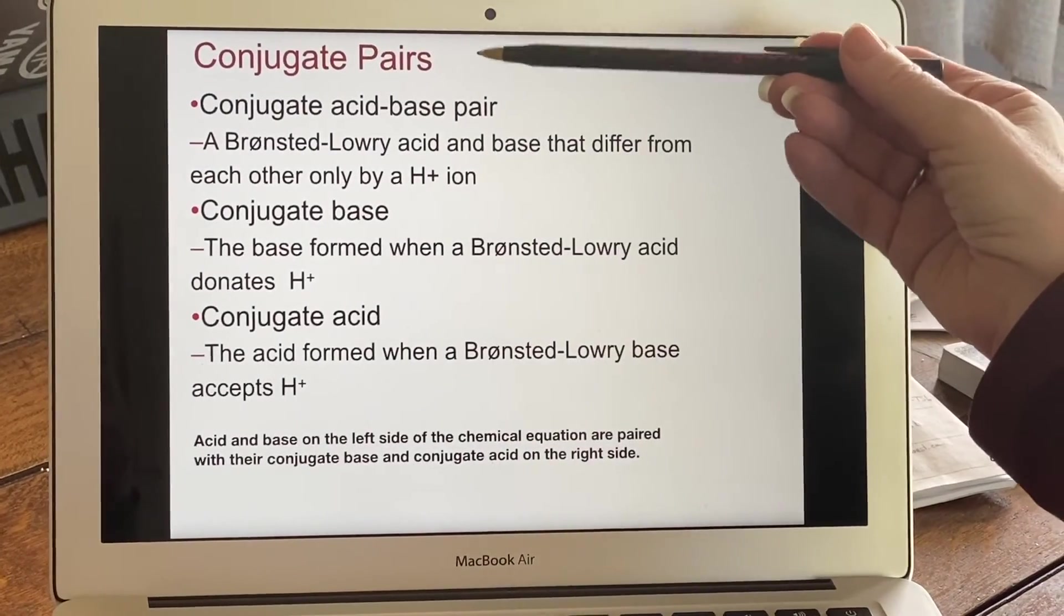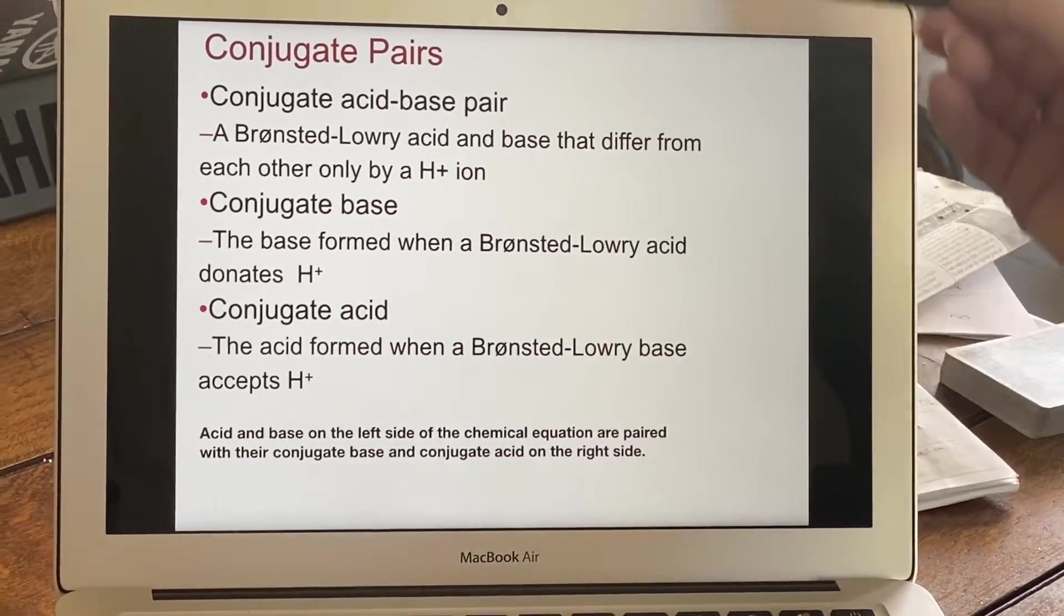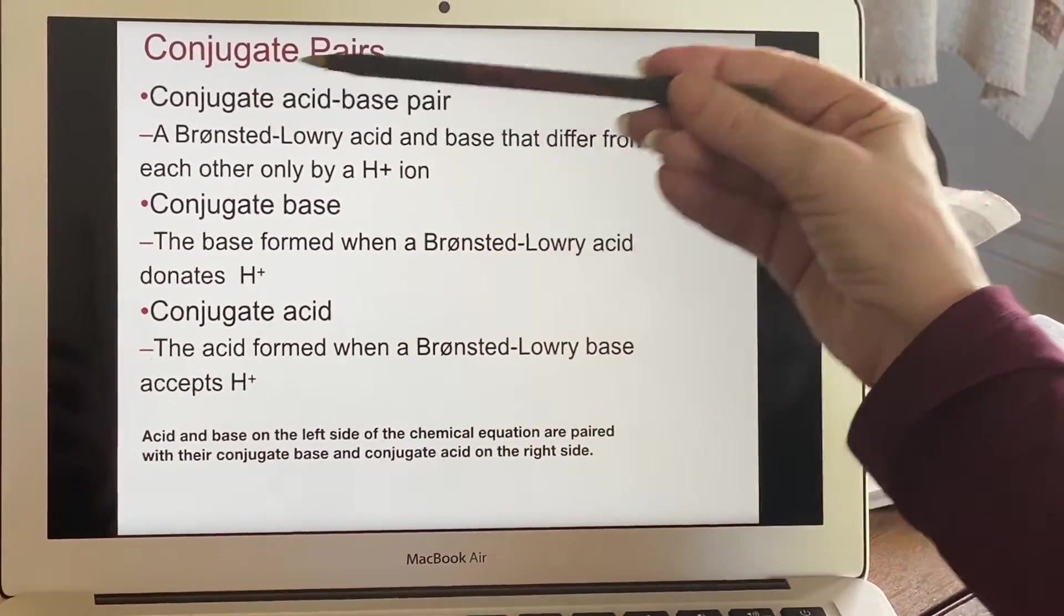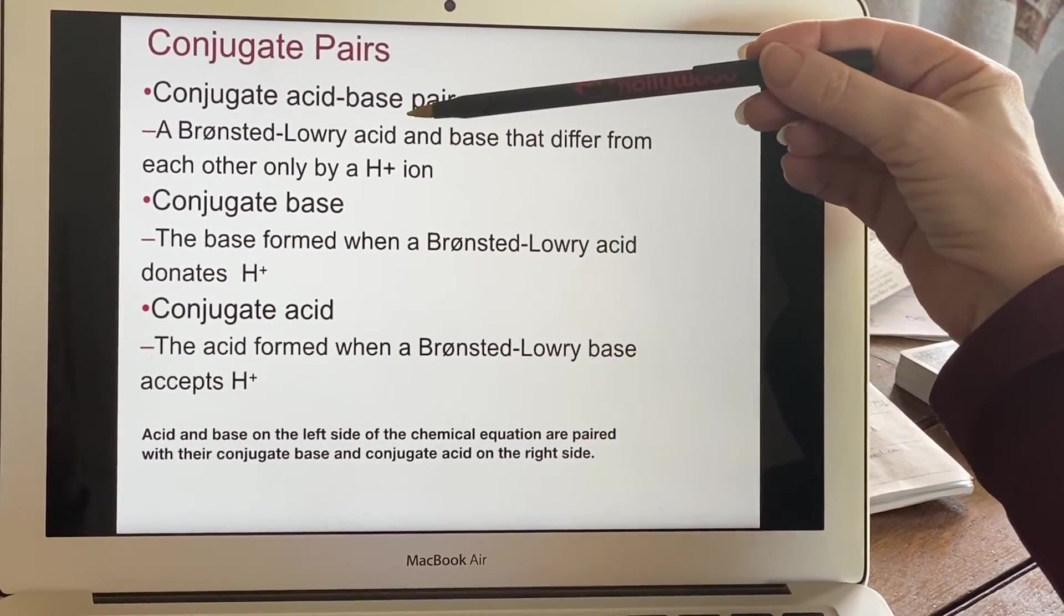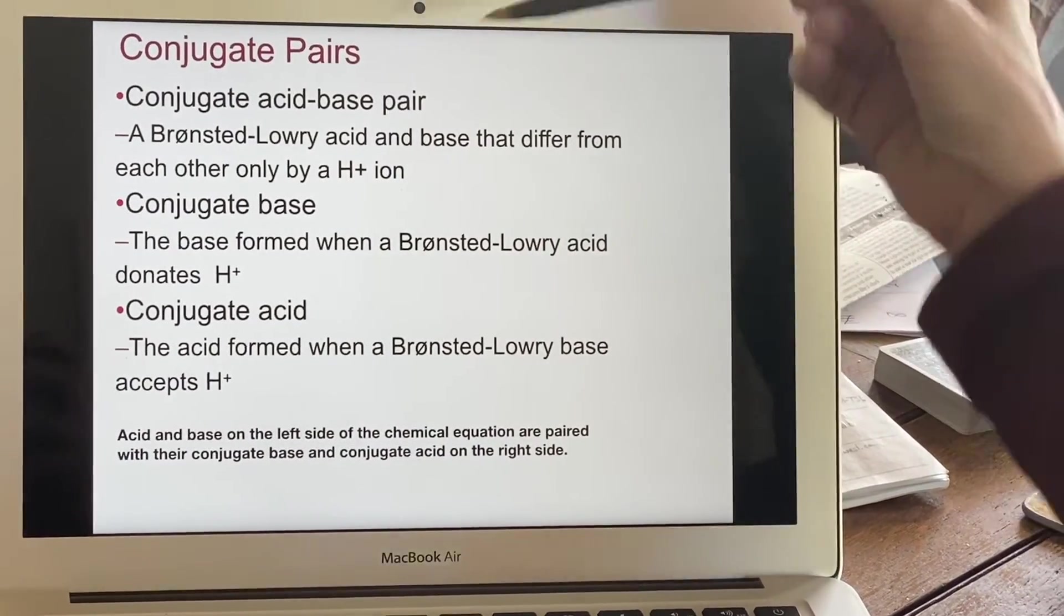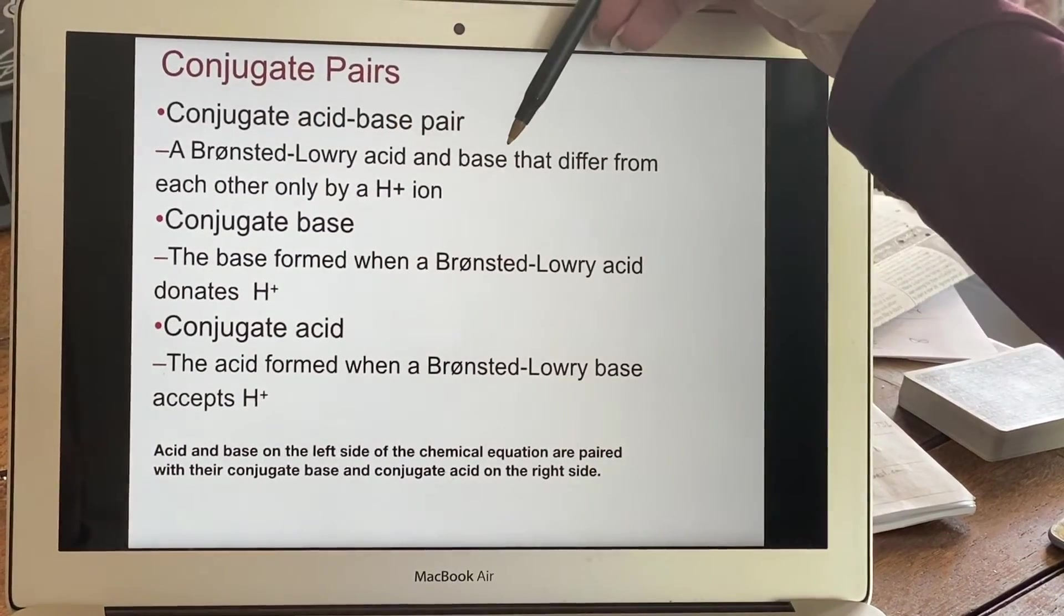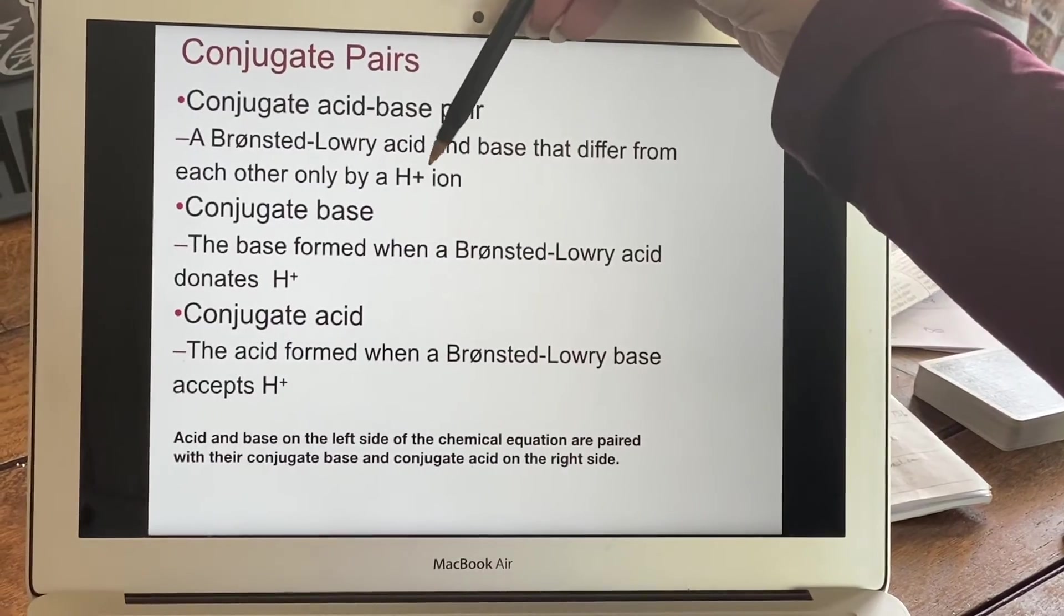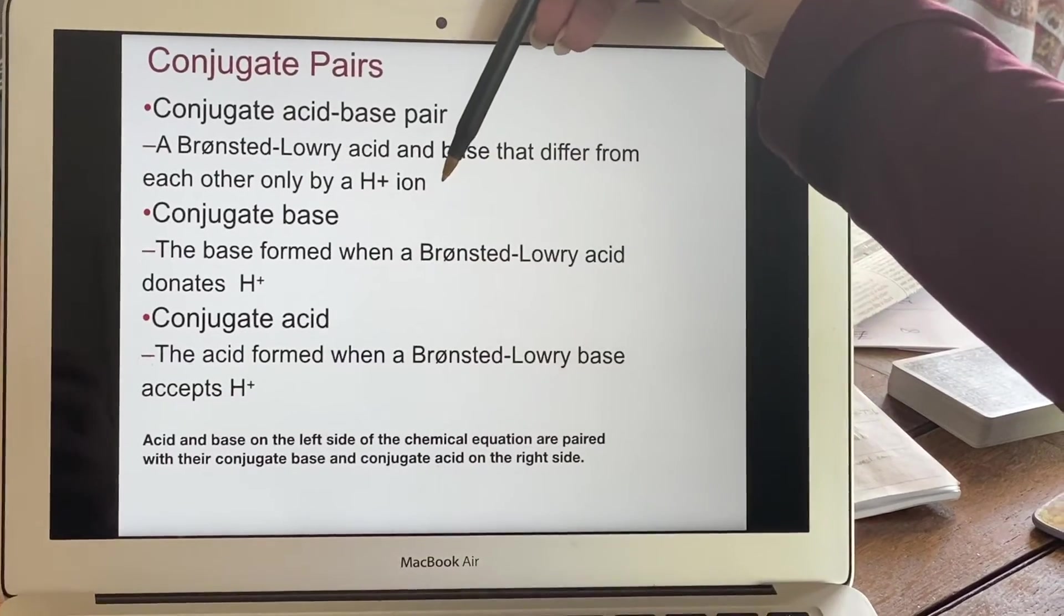Conjugate pairs. Now, we'll show you some more of this because right now we're just doing definitions, and it's terribly boring. I'm sorry for the wall of text. So conjugate pairs, a conjugate acid-base pair. So you're talking Bronsted-Lowry acids, so you're thinking about protons being accepted or donated. So a Bronsted-Lowry acid and base pair differ only by that proton, that H-plus ion, whether it's on it or not.